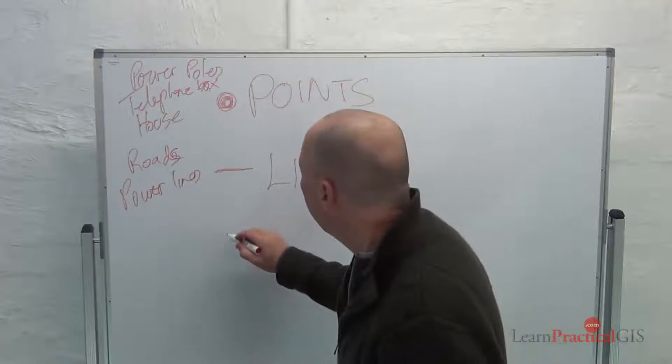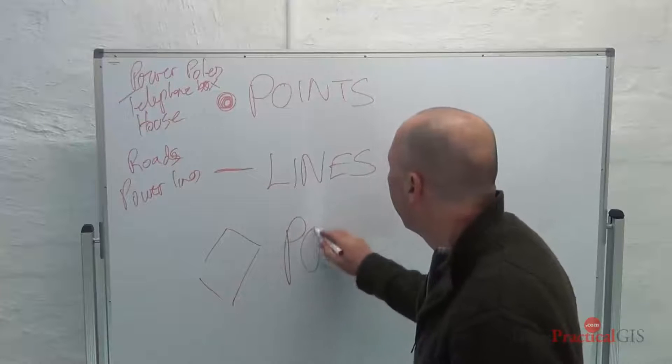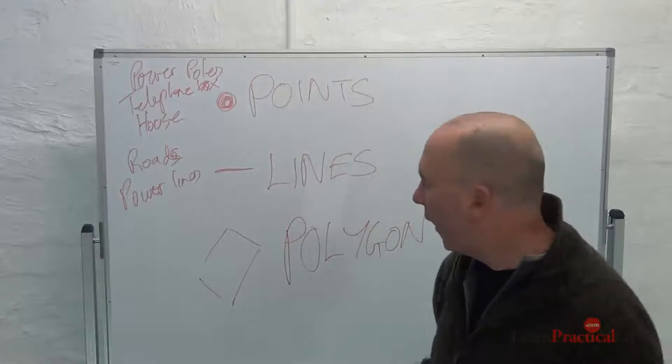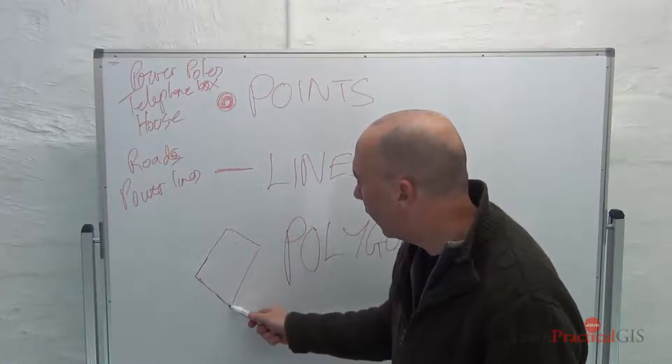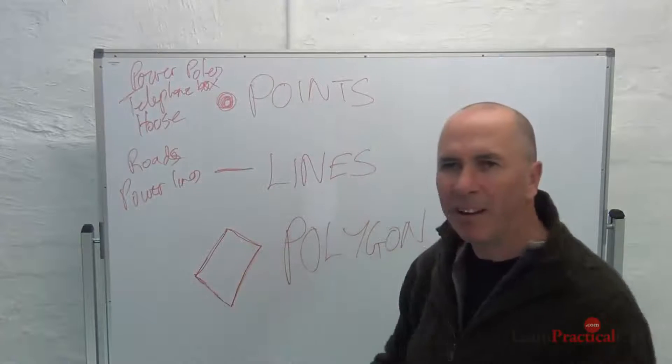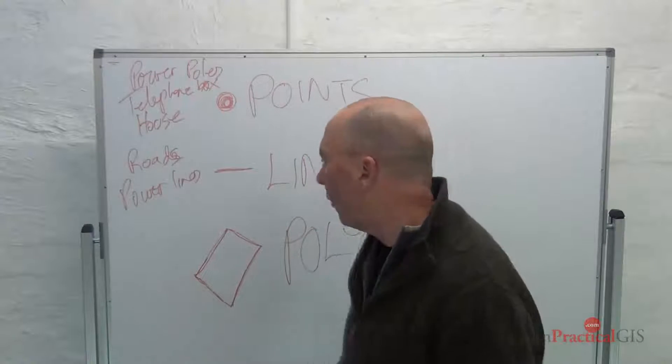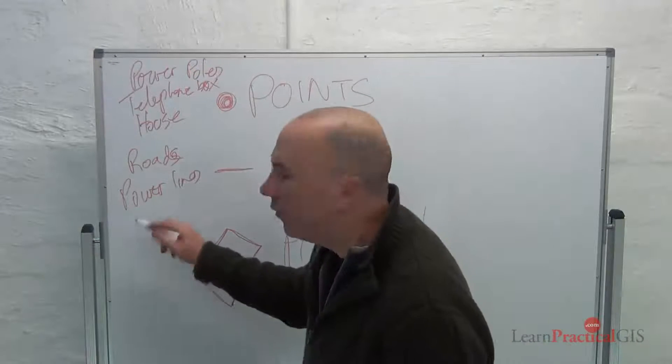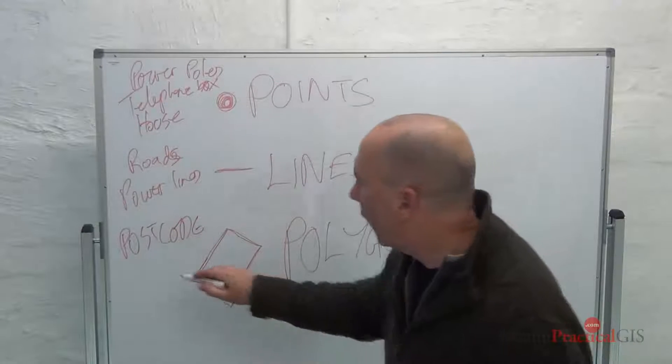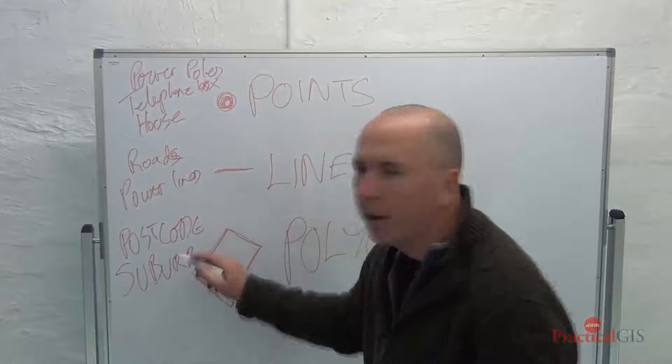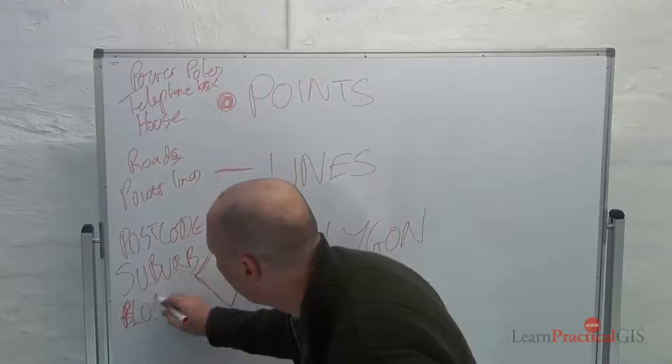But the third thing that's very relevant is this other thing called a polygon. Now, what I just drew is not a polygon because a polygon is enclosed. A polygon is basically an enclosed area that has lots and lots of lines, so it could be a square, it can be any odd shapes. And a polygon is something like a postcode or a zip code, a suburb, or a block of land.